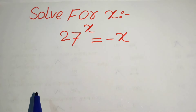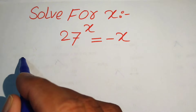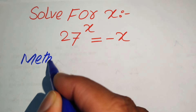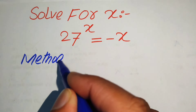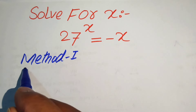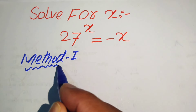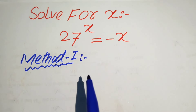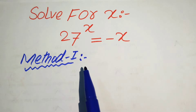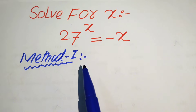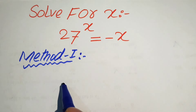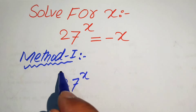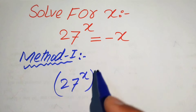In this question we solve this problem using two methods. For method number one, we take the x-th root on both sides, which means we take the 1 over x power on both sides.